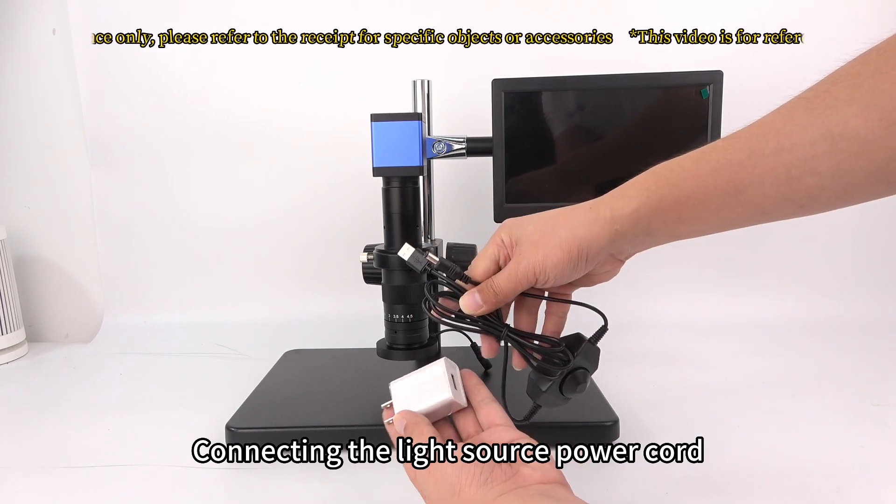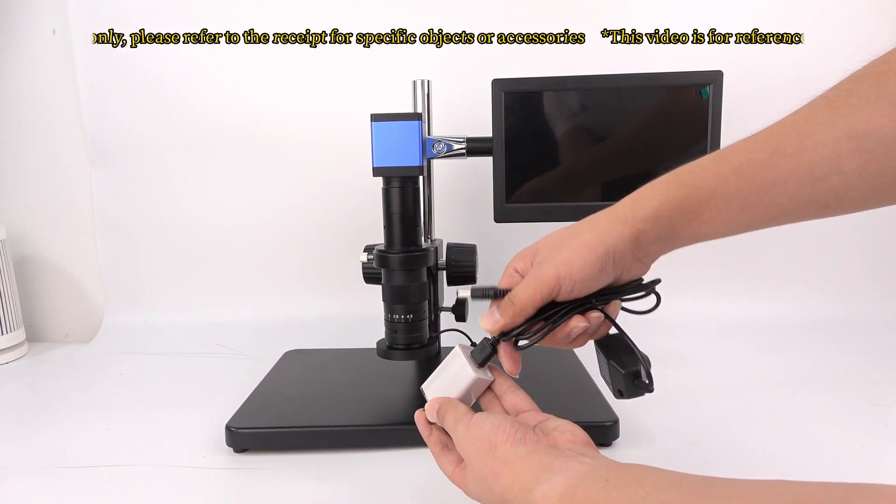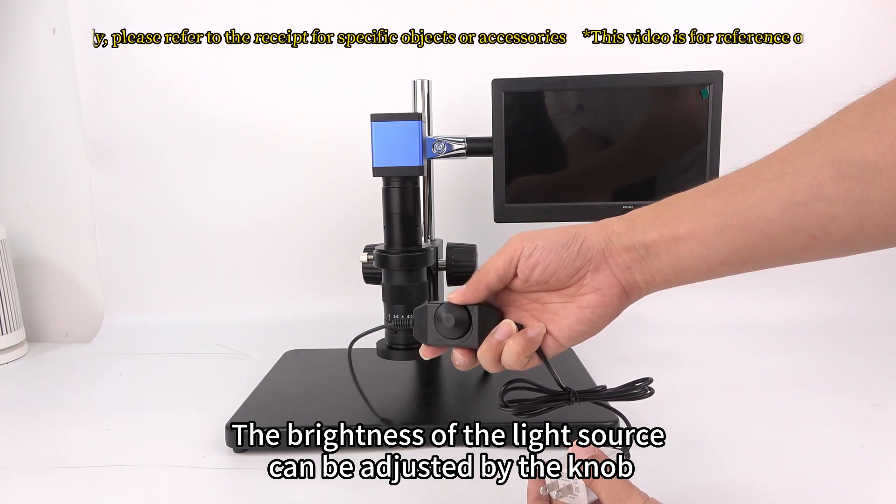Connecting the light source power cord. The brightness of the light source can be adjusted by the knob.